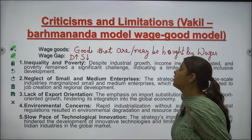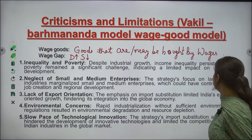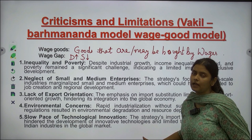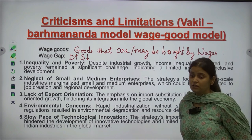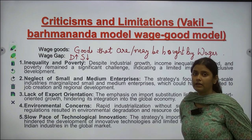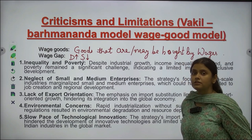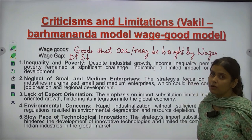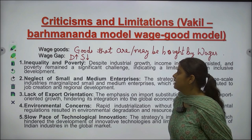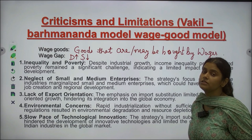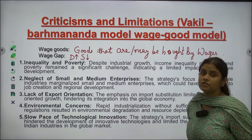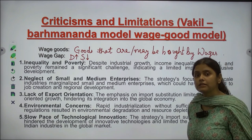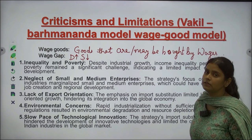The second criticism is inequality and poverty. Despite industrial growth, income inequality persisted and poverty remained a significant challenge, indicating limited impact on inclusive development. Though poverty and unemployment eradication was the main objective for which economic planning was set up, the Nehru-Mahalanobis strategy did not overcome poverty and inequality — the rich became richer and the poor became poorer. Next is neglect of small and medium enterprises. The strategy focused mainly on large and heavy industries and neglected small and medium industries, which could have created job creation and regional development.